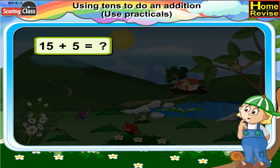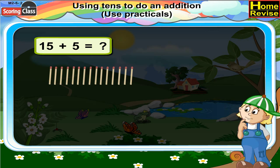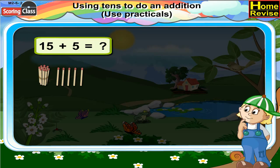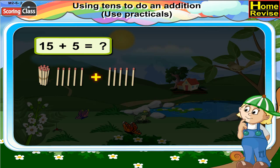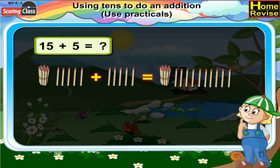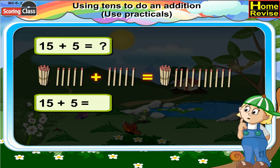Now, 15 plus 5. First, let us take 15 matchsticks. Create a bundle of 10 matchsticks, which is a 10, along with 5 more matchsticks. If we add 5 more matchsticks to it, how many matchsticks will there be? Yes, you're right — that will be 20. So 15 plus 5 is equal to 20.